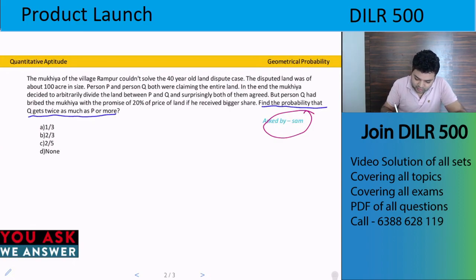If Q should be at least double of P, meaning Q should be at least 2P. So if total P plus Q is 1, then 3P equals 1 land, which is 1 let's say. So P equals 1/3 and Q equals 2/3.